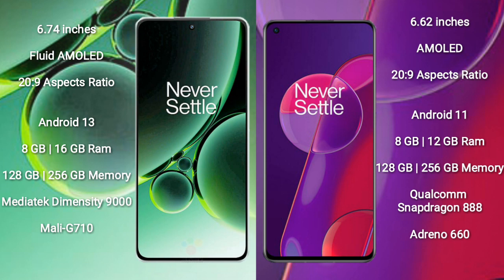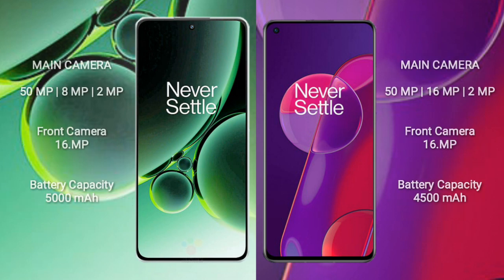OnePlus Nord 3 comes with 8GB or 16GB RAM and 128GB to 256GB internal storage, powered by the MediaTek Dimensity 9000 processor with Mali-G710 GPU. OnePlus 9RT comes with 8GB or 12GB RAM and 128GB to 256GB internal storage, powered by the Qualcomm Snapdragon 888 processor.